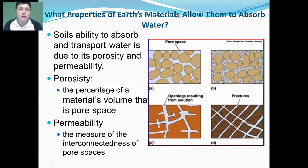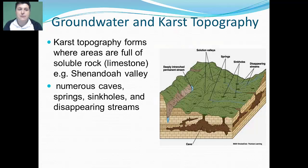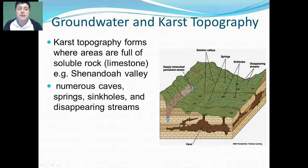Later on in this unit, we'll actually revisit these two concepts and explore them even further. Some areas have a different rock and soil makeup, like the Shenandoah Valley. A major component of the rock there is limestone. As slightly acidic rainwater percolates into the ground, it helps to break down that limestone, creating sinkholes and caves. This environment with sinkholes and caves as a result of that breakdown is called karst topography.